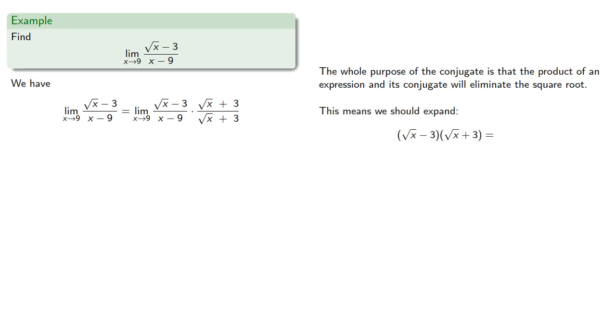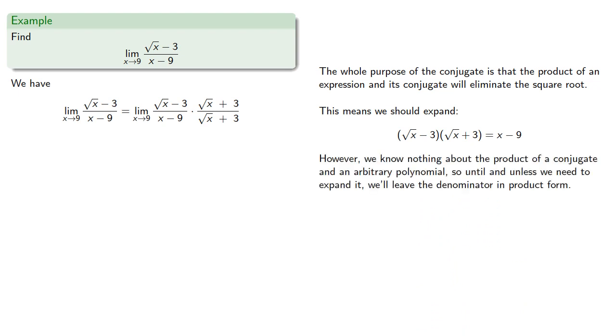This means we should expand the product in the numerator. However, we know nothing about the product of a conjugate and the arbitrary polynomial. So until and unless we need to expand it, we'll leave the denominator in product form.